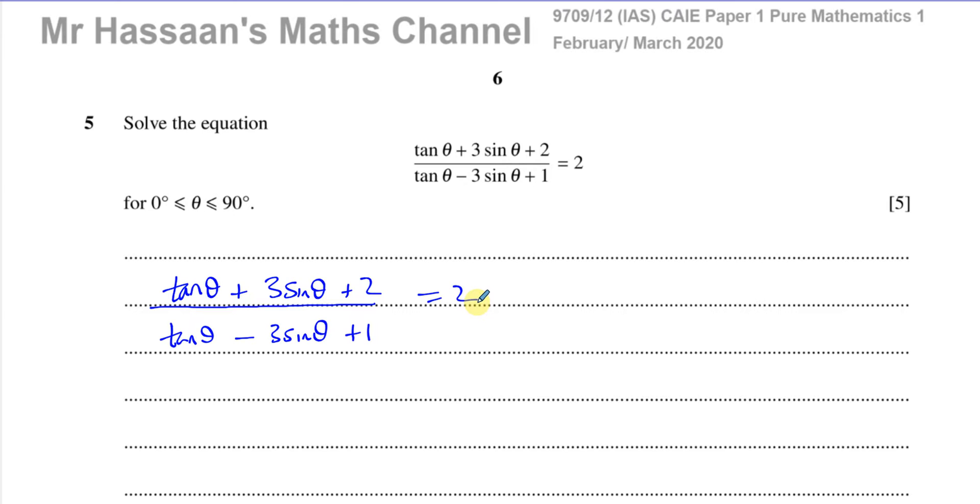But right now there's not much we can do unless we could make this as sin theta over cosine theta. But what I'll do first to make life easier would be to just get rid of the fraction. So I'm going to multiply both sides of the equation by this denominator.